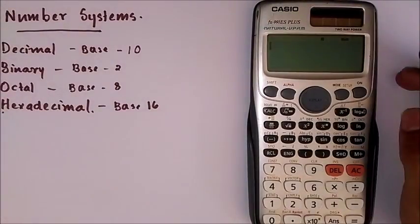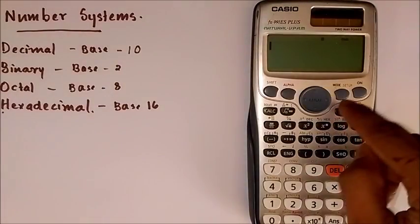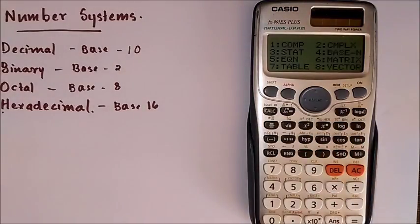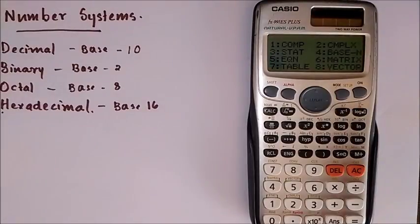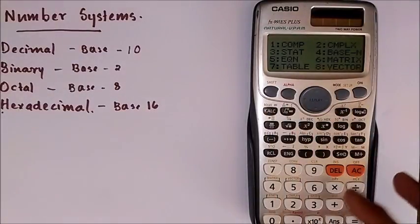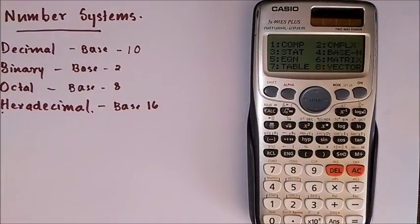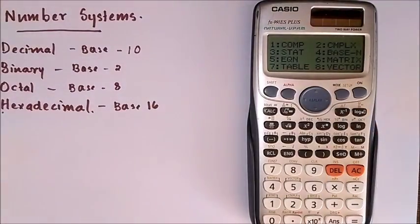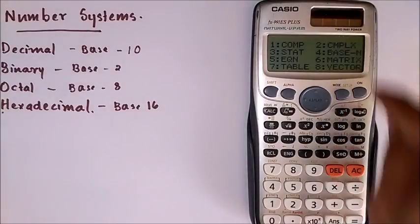Just switch on your calculator and click the mode button. This gives you a menu with multiple options for which mode of operations you require. In this calculator I have base N, that is we have to change the base of a number. So we click 4.